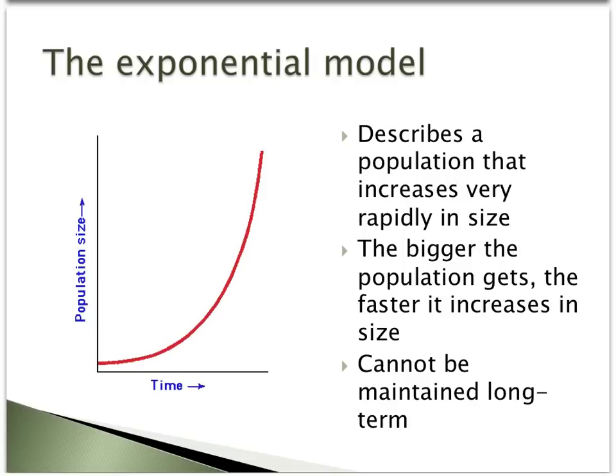Examples of where this type of growth can be observed would include the human population boom over the last 250 years, or, for example, bacterial population growth on a petri dish.